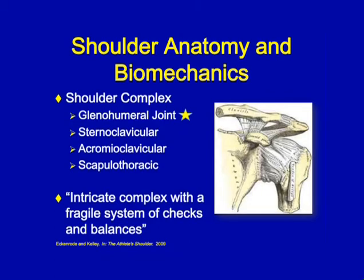Getting into some anatomy and biomechanics, we really need to think of the shoulder as a complex and not just focus specifically on the glenohumeral joint. It's important to consider the sternoclavicular, acromioclavicular, and scapulothoracic when going through the evaluation of the glenohumeral joint dislocation. Eckenrode and Kelly define the glenohumeral joint specifically as an intricate complex with a fragile system of checks and balances, and there are a lot of different factors that go into the stability of the joint.